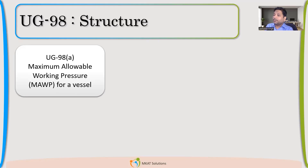What is MAWP? In very layman's terms — if anybody wants to describe what is MAWP for a vessel or a component: it is the maximum pressure-taking capability of that component or the pressure vessel.